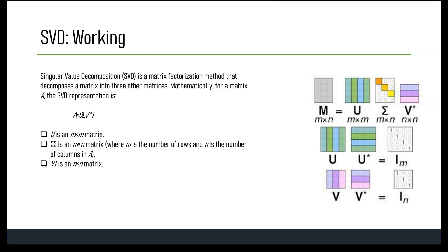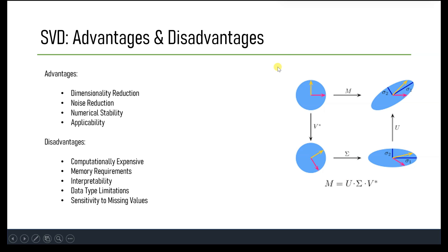The decomposition is fundamental in various mathematical operations, data compression, dimensionality reduction, and signal processing. Advantages of SVD include dimensionality reduction — it is effective at reducing dimensionality while retaining relevant information and can extract the most important features from high-dimensional datasets. It also provides noise reduction by removing redundant information, especially useful in signal processing and image compression.